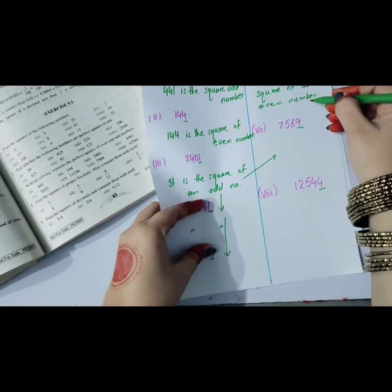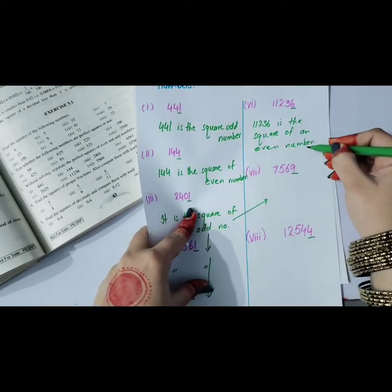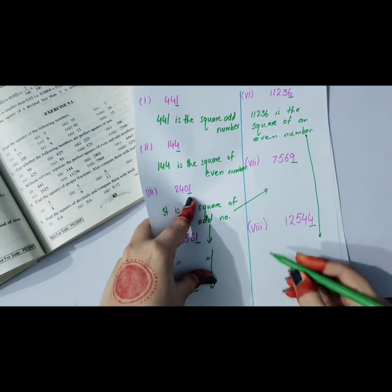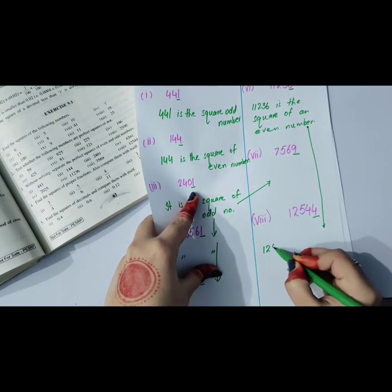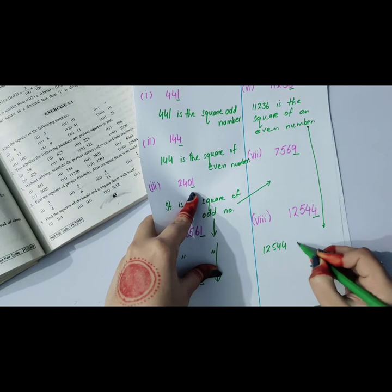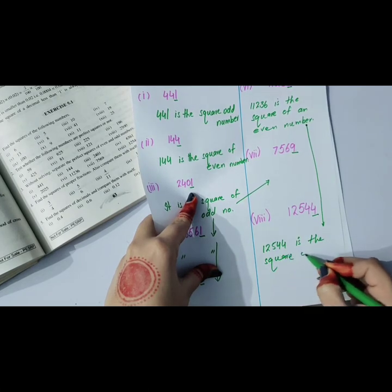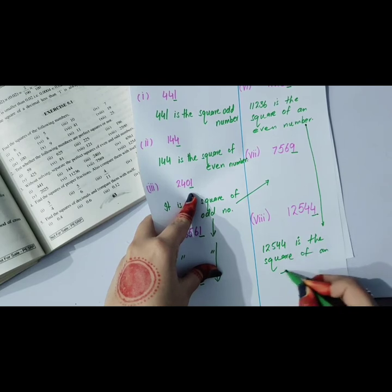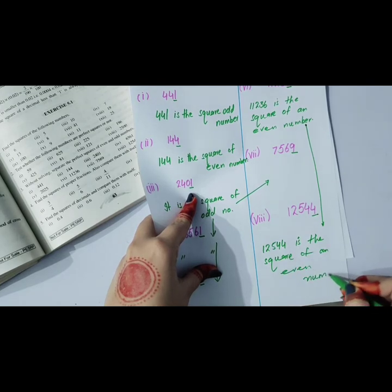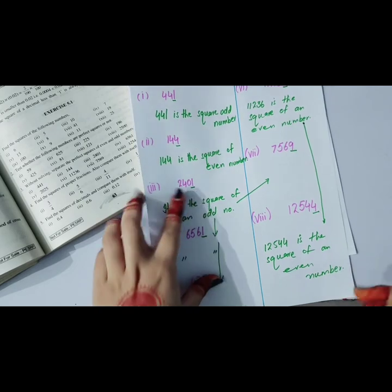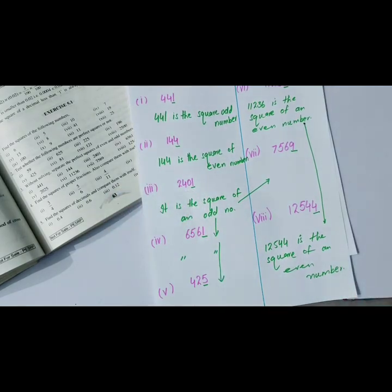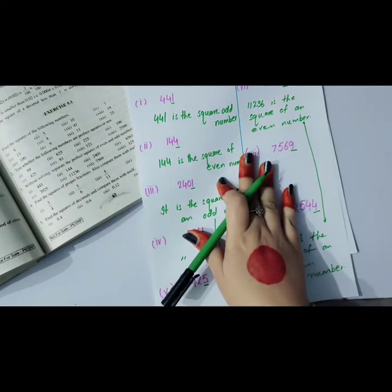Part 6: 12544 ends in 4, so it is the square of an even number. See how easy it is to separate perfect squares by identifying which family they belong to, even or odd. This was very easy.